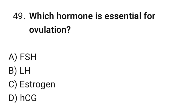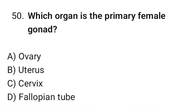Question No. 49: Which hormone is essential for ovulation? The correct option is B. Luteinizing hormone. Question No. 50: Which organ is the primary female gonad? The correct option is A. Ovary.